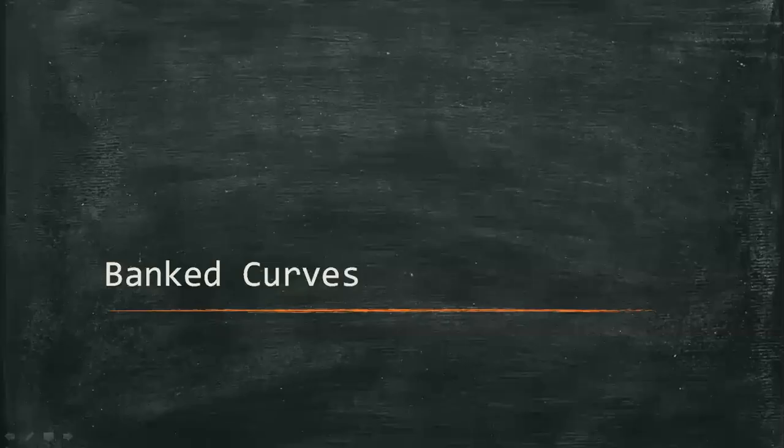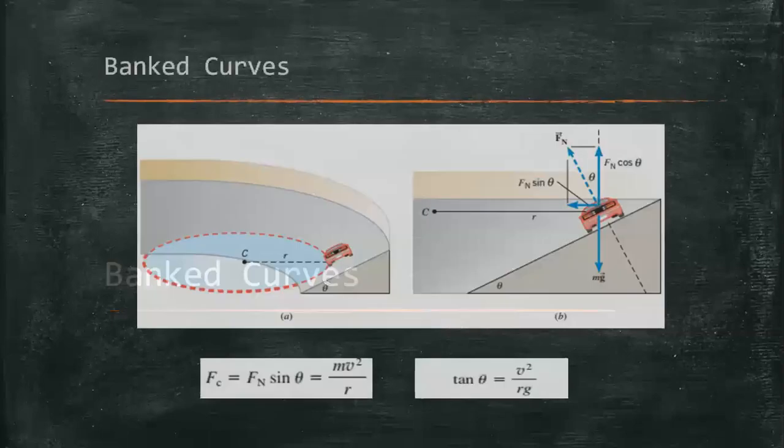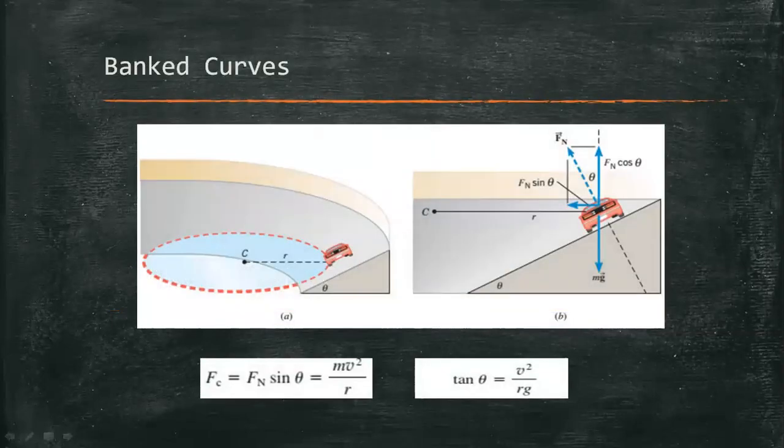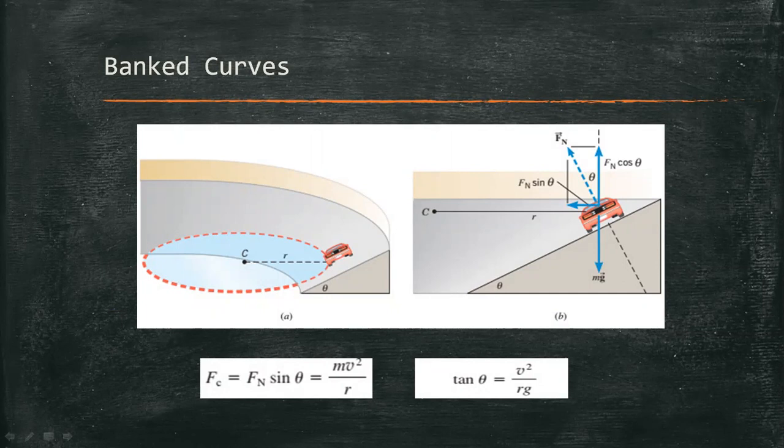Banked curves. When a car travels without skidding around an unbanked curve, the static frictional force between the tires and the road provides the centripetal force.